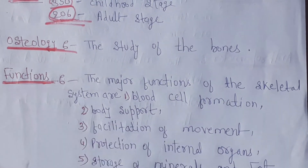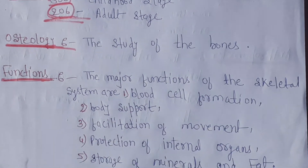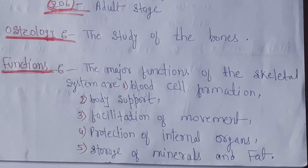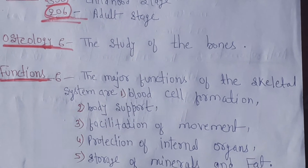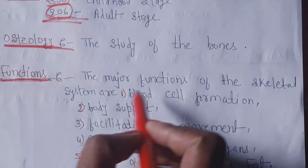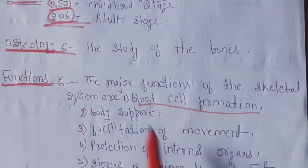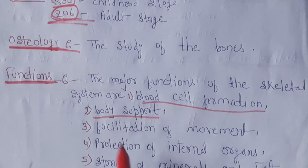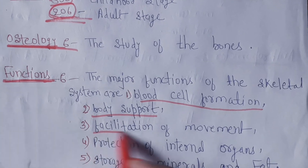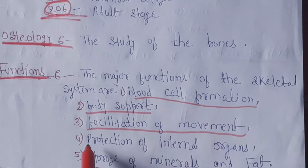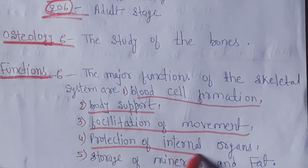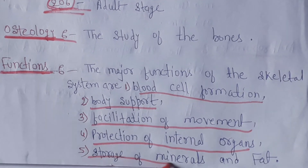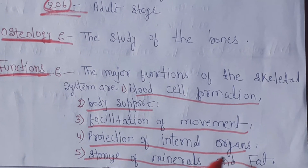What are the major functions of the skeletal system? There are many major functions: blood cell formation, body support, facilitation of movement, protection of internal organs, and storage of minerals and fat.